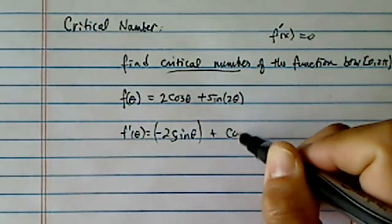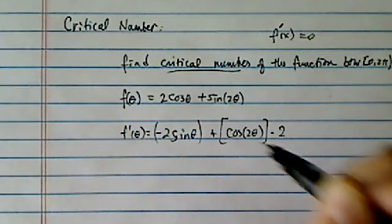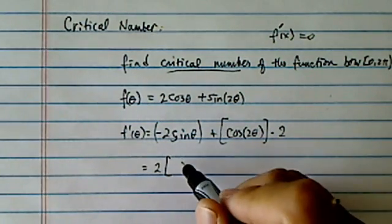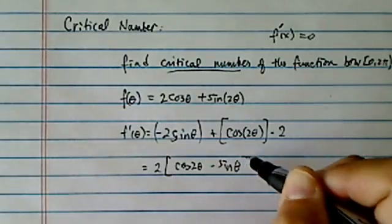And then plus, this one is cosine of two theta. And using chain rule, you do have to multiply two again. So this is relatively easy. And so far, we have cosine two theta minus sine of theta.